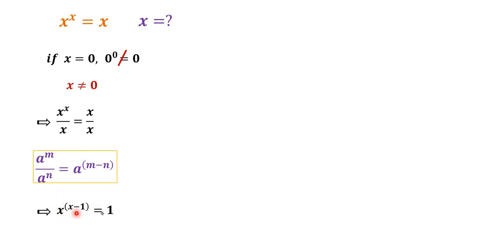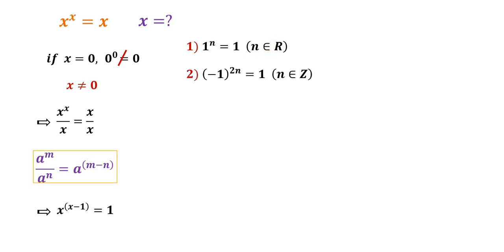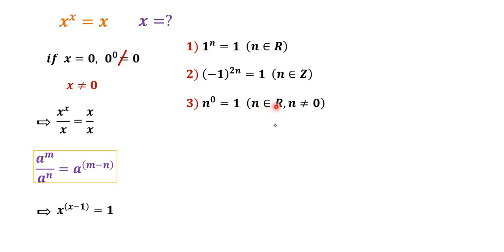Look at this equation — we have something to the power of something else is equal to 1. We have several cases. The first case: 1 to the power of n is equal to 1, where n is any real number. The second case: negative 1 to the power of 2n is equal to 1, where n is an integer. The third case: n to the power of 0 is equal to 1, where n is any real number and n is not equal to 0.